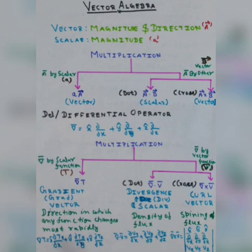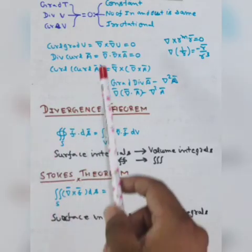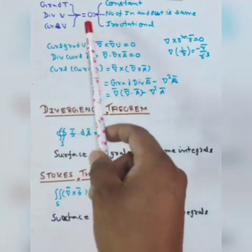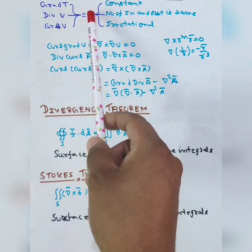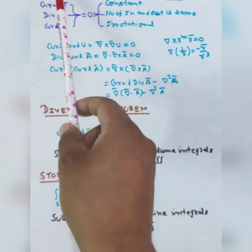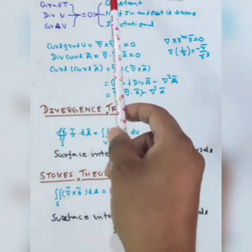Here I am representing the mathematical form of the above three products. In this slide, if the gradient of any scalar function is zero, that function is constant everywhere.